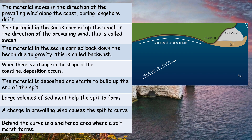Right, these are the answers — I'll read through them and the diagram on the right-hand side will help. First: the material moves in the direction of the prevailing wind along the coast during longshore drift. In this diagram, longshore drift is happening easterly, prevailing wind is northeast. The material in the sea is carried up the beach in the direction of the prevailing wind — this is called the swash. The material is then carried back down the beach due to gravity — this is called the backwash.